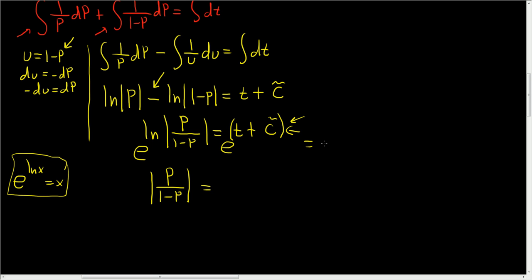And then here we end up with, well, this is actually e to the t e to the c tilde. So I'm going to write it as e to the c tilde, e to the t. And why can you do that? Well, we're just adding exponents. t plus c tilde is simply t plus c tilde.